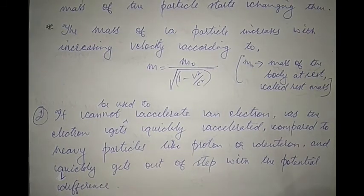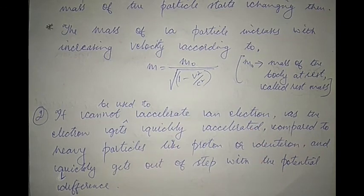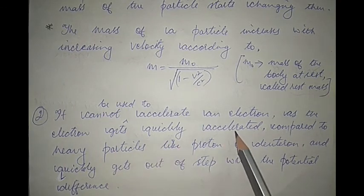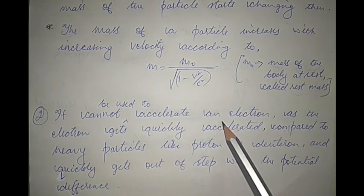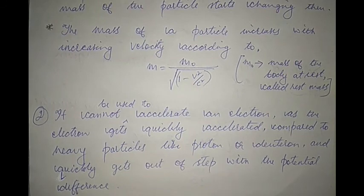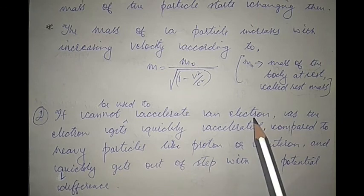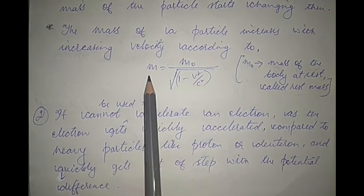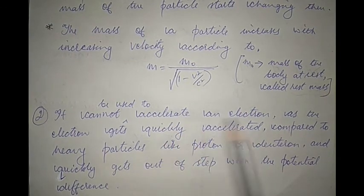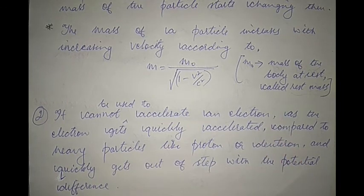Another limitation: a cyclotron cannot be used to accelerate light particles like electrons. Because an electron has a very small mass, it quickly accelerates and very quickly attains a velocity comparable to that of light. At that point its mass starts changing, the frequency at which it describes semicircular paths stops matching the frequency of the alternating potential, and the cyclotron fails. These are the two main limitations of a cyclotron.